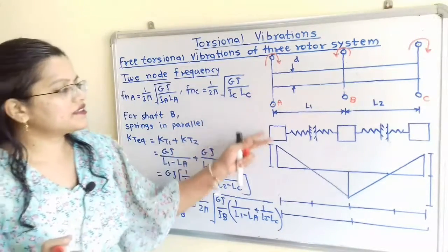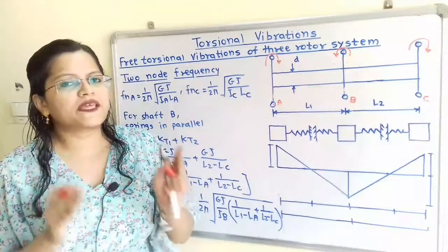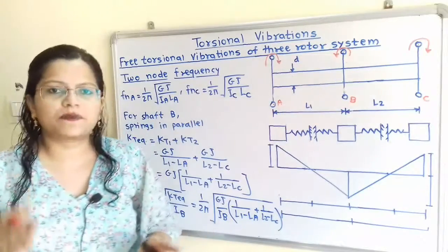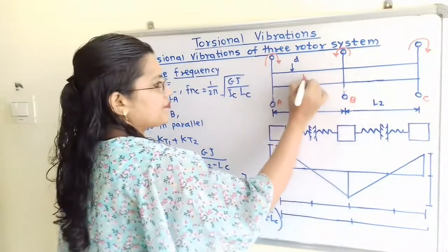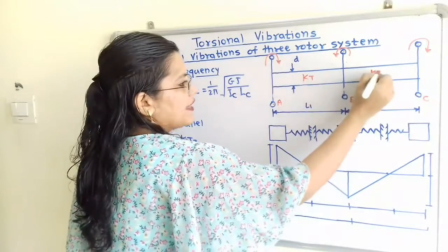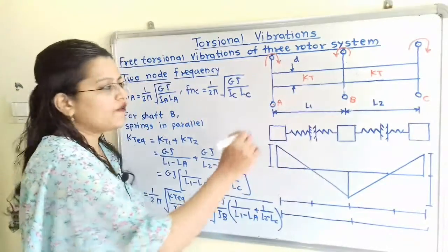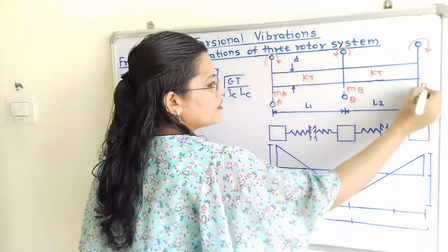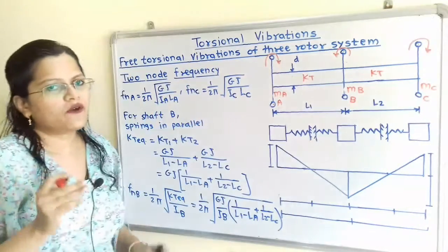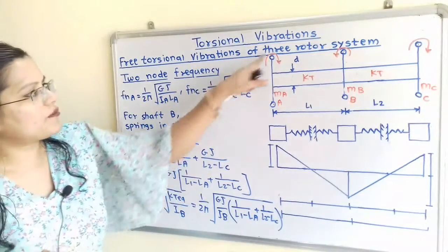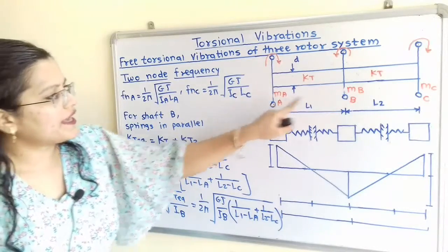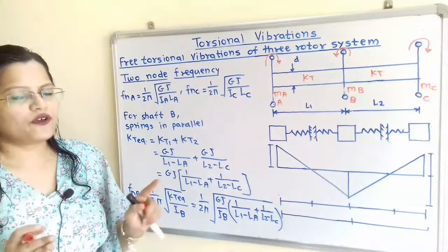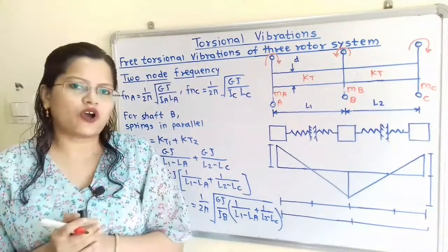Now we will convert this system into an equivalent spring-mass system. The shaft will work as a spring with stiffness KT, and the rotors will work as masses. The mass of rotor A is MA, mass of rotor B is MB, and mass of rotor C is MC. Rotors A and B rotate in opposite directions, and therefore free torsional vibration occurs.